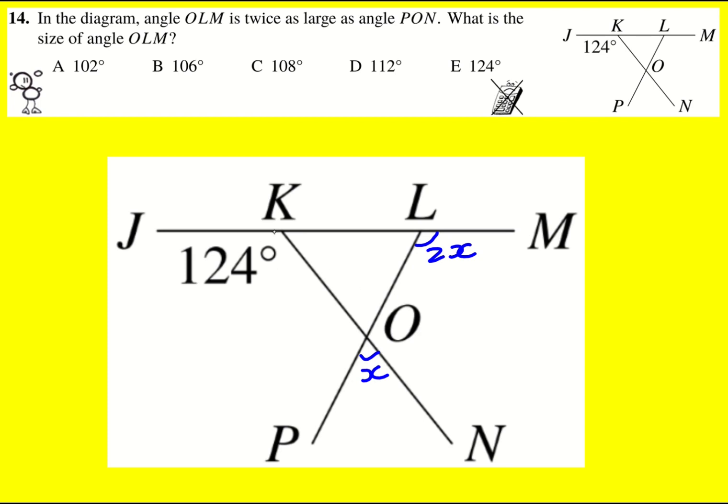And we've also got this as 124°. Okay, let's do this. So this angle here will also be X. These are called vertically opposite angles. They are exactly the same because these two add up to 180, but so do these two. So they must be the same.